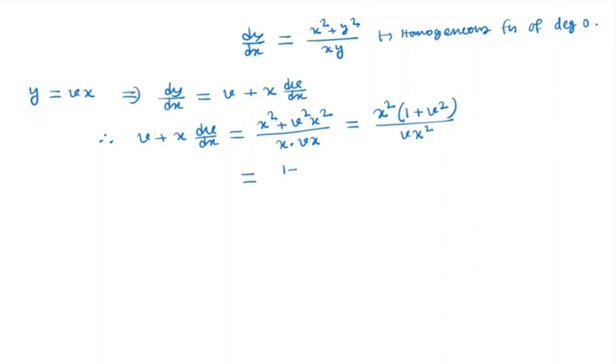So x(dv/dx) = (1 + v²)/v - v = (1 + v² - v²)/v = 1/v. Therefore, x(dv/dx) = 1/v. By separating variables, we get v dv = dx/x.